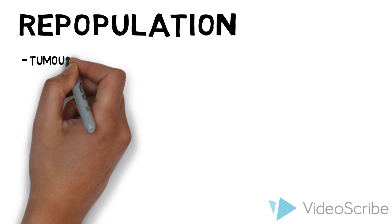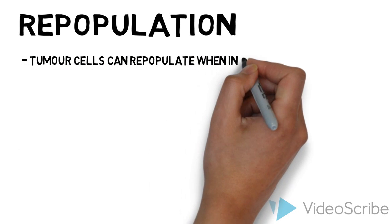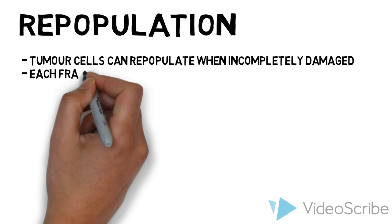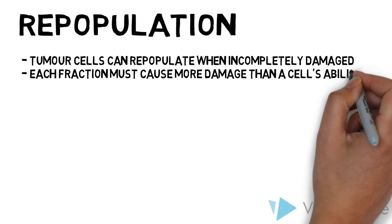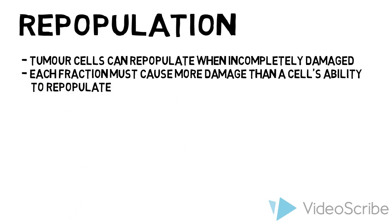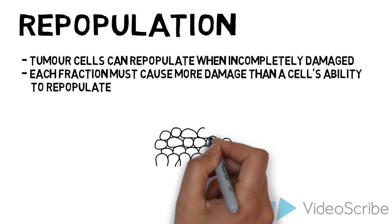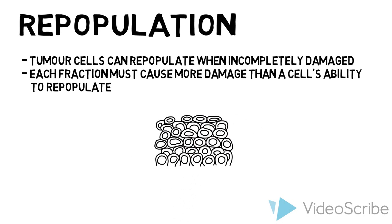Repopulation: tumor cells can repopulate themselves if incompletely damaged. Each fractionation of radiation must cause more damage than a tumor cell's ability to repopulate. Concurrently, fractionation also allows normal cells to repopulate.